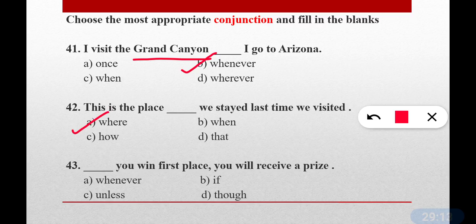Conjunctions join two sentences together. Question number forty-three: Dash you win first place, you will receive a prize. The correct answer is option B — 'if'. If you win first place, you will receive a prize. It's a conditional — 'if' is used for conditions.